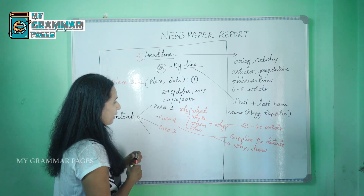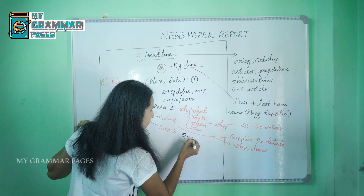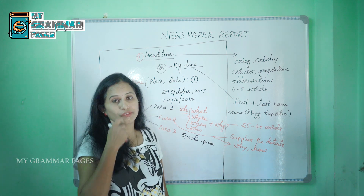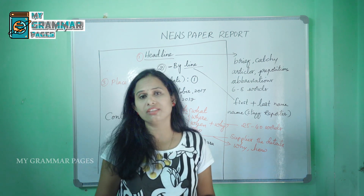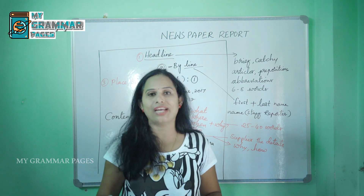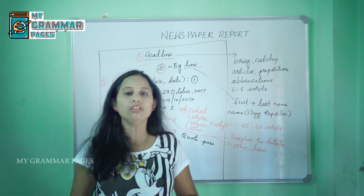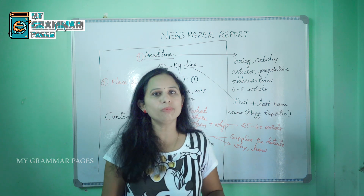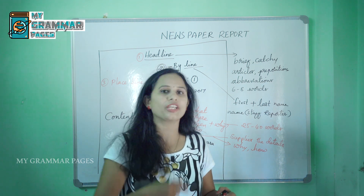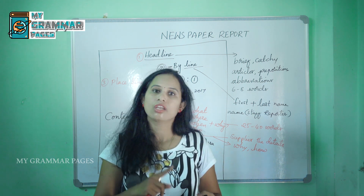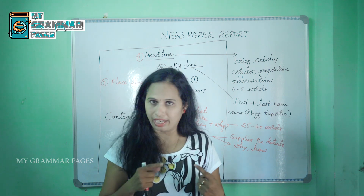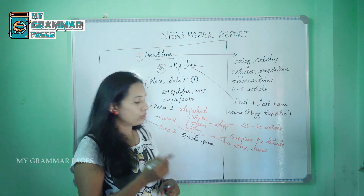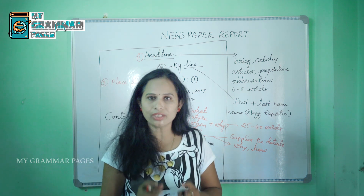The third paragraph is otherwise called the quote paragraph. A quote is the words of the eyewitnesses. Eyewitnesses can be found in the surroundings of the accident. If they are not available, depending upon the news article, it can be a quote from the doctor giving treatment to the victims, the police officer who came to investigate the case, or even the victim. The first line of this paragraph will begin with a quote.